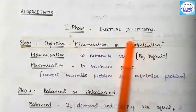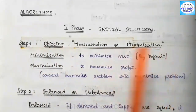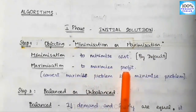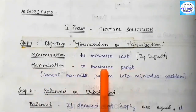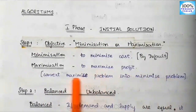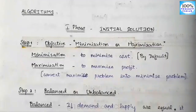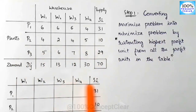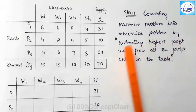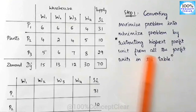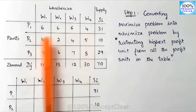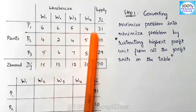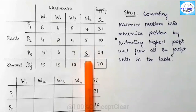We can solve this step by step. This algorithm has a first phase of initial solution. Step one: what is the objective — minimization or maximization? In this problem, we need to find the maximum total return, so it is a maximization problem. What we will do is convert the maximize problem into a minimize problem.